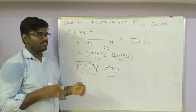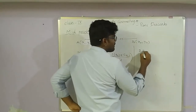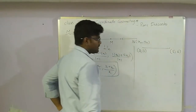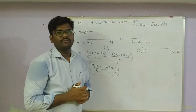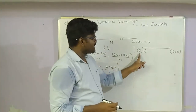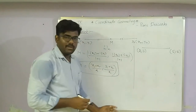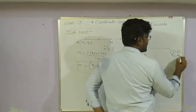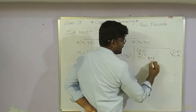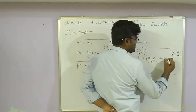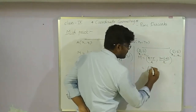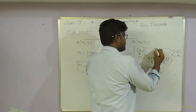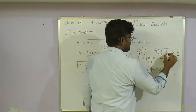Example: Find the midpoint of the line segment joining (2, 3) and (5, −6). Using the midpoint formula: x = (2 + 5)/2 = 7/2, y = (3 + (−6))/2 = −3/2. So the midpoint is (7/2, −3/2).